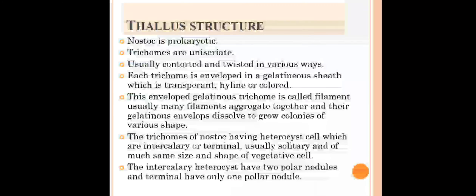Thallus structure: Nostoc is prokaryotic, meaning it does not have a membrane-bound nucleus. Trichomes are uniseriate — a single chain of cells — usually contracted and twisted in various ways. Each trichome is enveloped in a gelatinous sheath which is transparent, hyaline (clear), and coloured. This enveloped gelatinous trichome is called a filament.